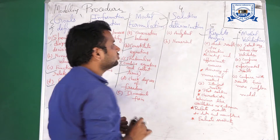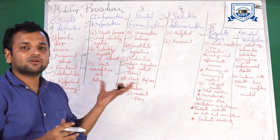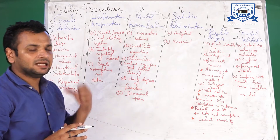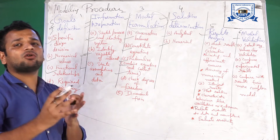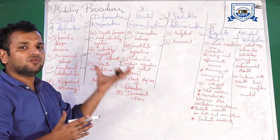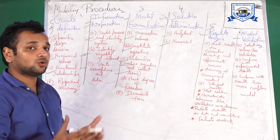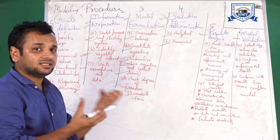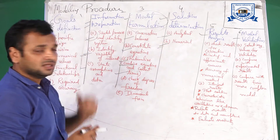The fourth step is solution determination. Here you define the basic control strategy to follow — either an analytical method or a numerical method. In the next unit we will see different types of control strategies for controlling linear or nonlinear process behavior. So what type of control strategy you follow, analytical or numerical, comes under solution determination.